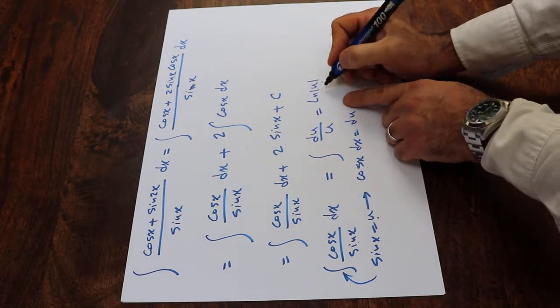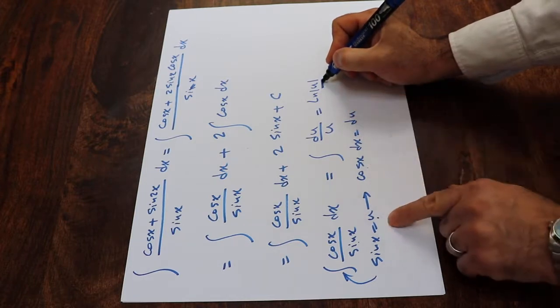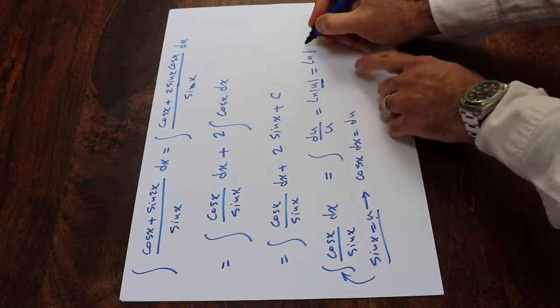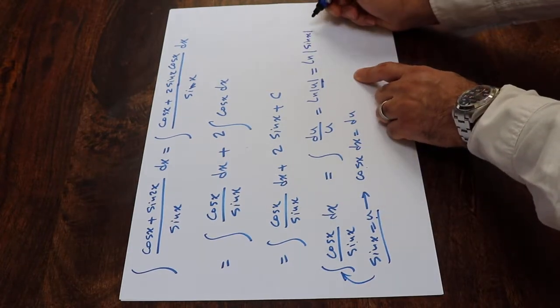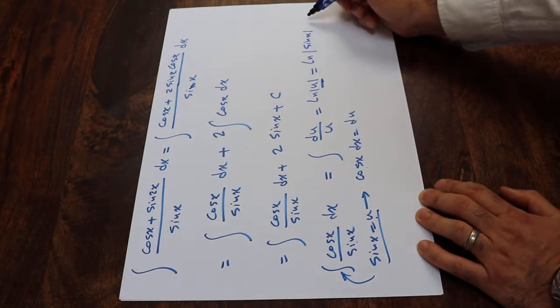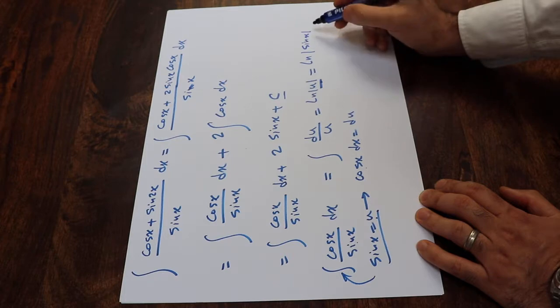Here, all you need to do is to substitute this parameter u with the definition of u, which is sine x. Therefore, this will be equal to ln sine x plus c, which is the constant of the integral, but I already wrote c here, so you don't need to do it again.